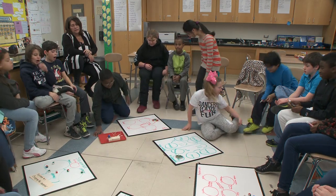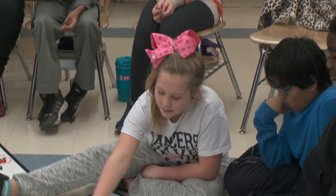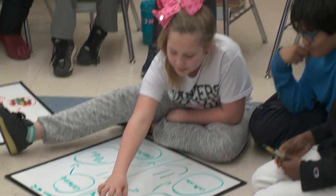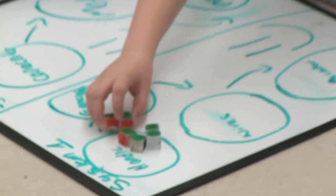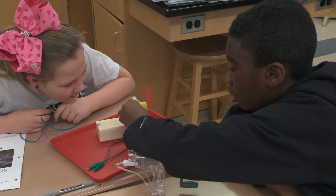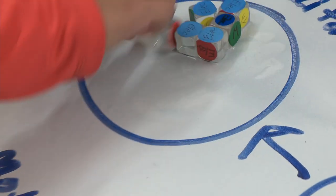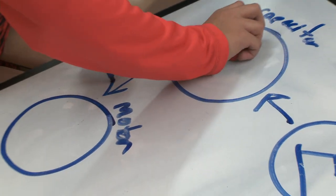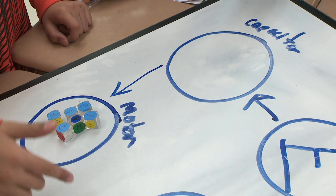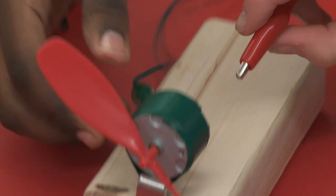We have the handle that we cranked up and had all the motion energy from us, and then the generator — the energy transferred over to the generator and transformed. The capacitor gives energy to the motor, electrical energy to the motor, and then it goes to the propeller and it changes to motion energy.